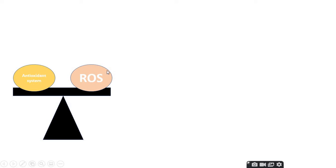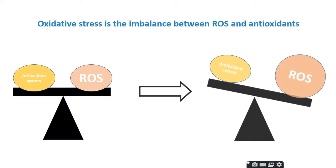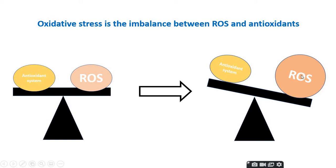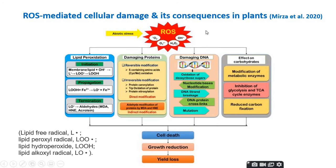However, under stress or harsh conditions, there is an imbalance between the antioxidant system and ROS. This means high levels of ROS are produced in the cell that cannot be scavenged by the antioxidant system — this is how oxidative stress develops in the cell.